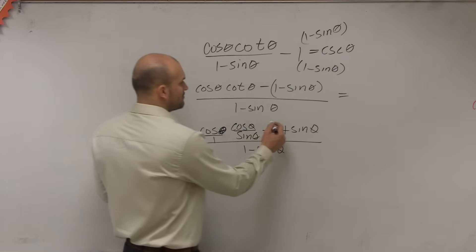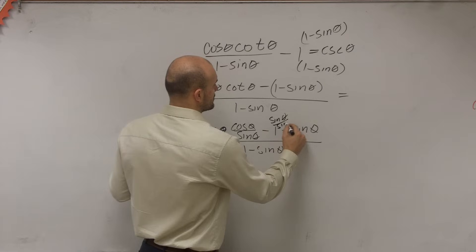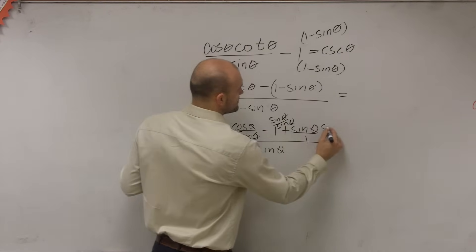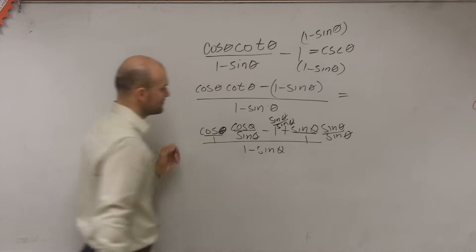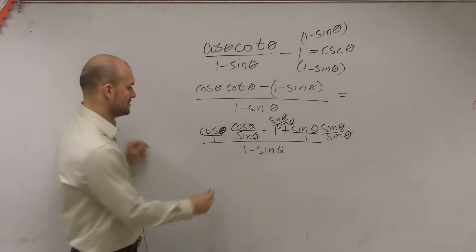That means I'm going to have to multiply 1 by sine of theta over sine of theta. Sine over 1, I have to multiply by sine of theta over sine of theta. And then here, since I'm multiplying this across, I don't need to multiply this term. So therefore, on my new numerator, I have cosine squared of theta over sine of theta